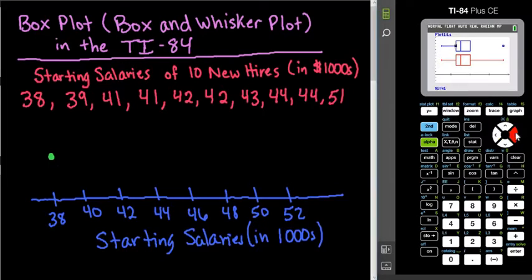And then I can arrow over to the next point. And it says that Q1 is at 41. So that's the first quartile is at 41. So I could put a dot at 41 and then I'm going to enclose that in a box. And if I go to the next point, it's 42. So our median would be 42.